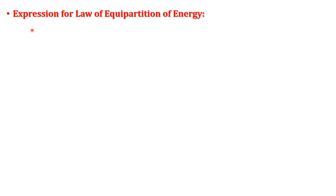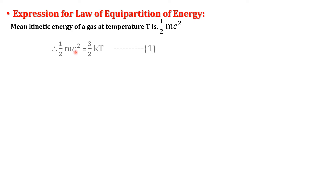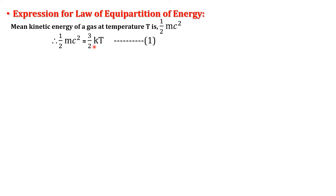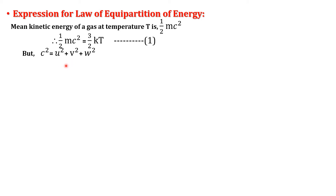Now we find the expression for the law of equipartition of energy. According to the kinetic theory of gases, the mean kinetic energy of a molecule at temperature T is given by: half mc² = 3/2 kT, where C is the mean square velocity of the molecule and k is the Boltzmann constant. The mean square velocity C² = u² + v² + w², where u, v, w are the velocity components along the x, y, and z directions.